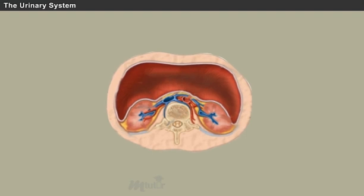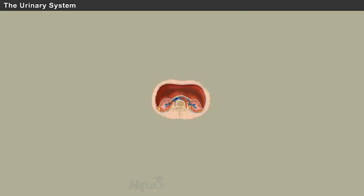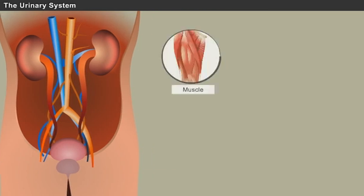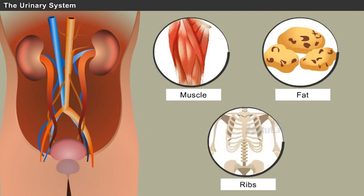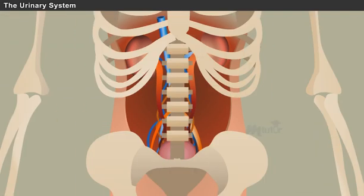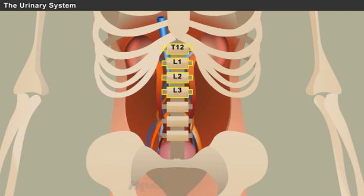The kidneys are a pair of bean-shaped organs on either side of the spine, in the retroperitoneal space between the parietal peritoneum and the posterior abdominal wall, well protected by muscle, fat, and ribs. The left kidney is located at about the T12 to L3 vertebrae, whereas the right is lower due to a slight displacement by the liver.